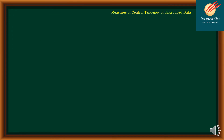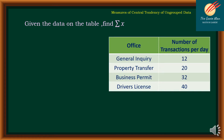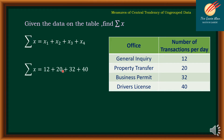Let's consider another example. Given the data on the table, find the summation of x. We have the following offices: general inquiry, property transfer, business permit, and driver's license, with number of transactions per day of 12, 20, 32, and 40. So the summation of x sub i means x sub 1 + x sub 2 + x sub 3 + x sub 4, where x sub 1=12, x sub 2=20, x sub 3=32, and x sub 4=40. The summation equals 104.